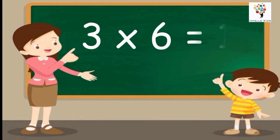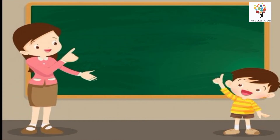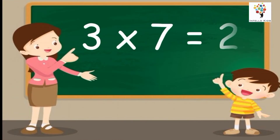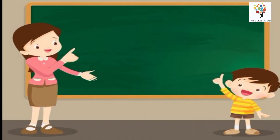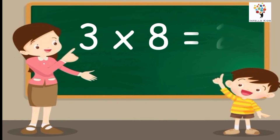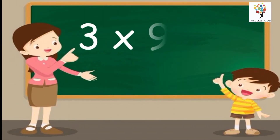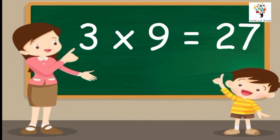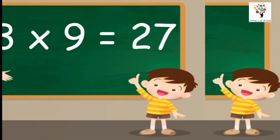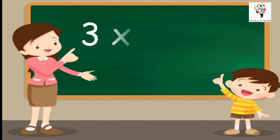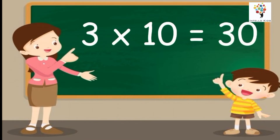Three sixes are eighteen. Three sevens are twenty-one. Three eights are twenty-four. Three nines are twenty-seven. Three tens are thirty.